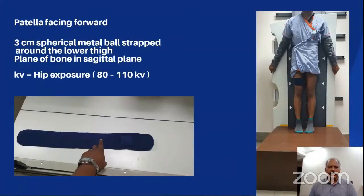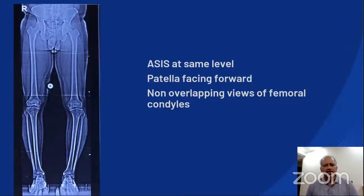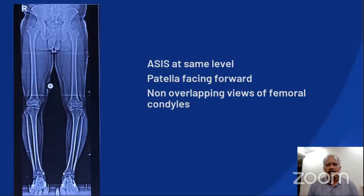In our hospital, we use a setup consisting of multiple cassettes with a stitching software, and cheaper Indian versions are available for outpatient setups as well. The patient is positioned so that the patella should face forward. A magnification marker, a metallic sphere of 3 cm radius, is strapped around the lower thigh. A sphere always casts a circular shadow in any position and hence it is preferred over coins, squares, etc. In a properly done x-ray, both the ASISs should be at the same level.